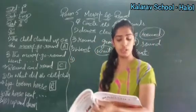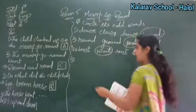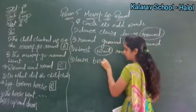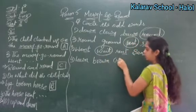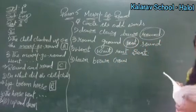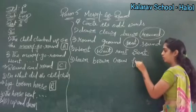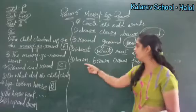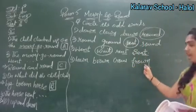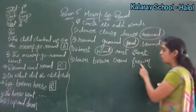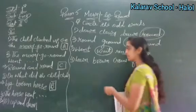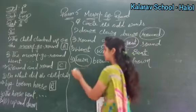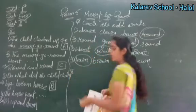Now moving further with the fourth number. The words are: lawn, brown, crown, and frown. Brown, crown, and frown have the same pronunciation pattern ending in '-own'. Lawn is spoken differently, so lawn is the odd word. Circle 'lawn'.